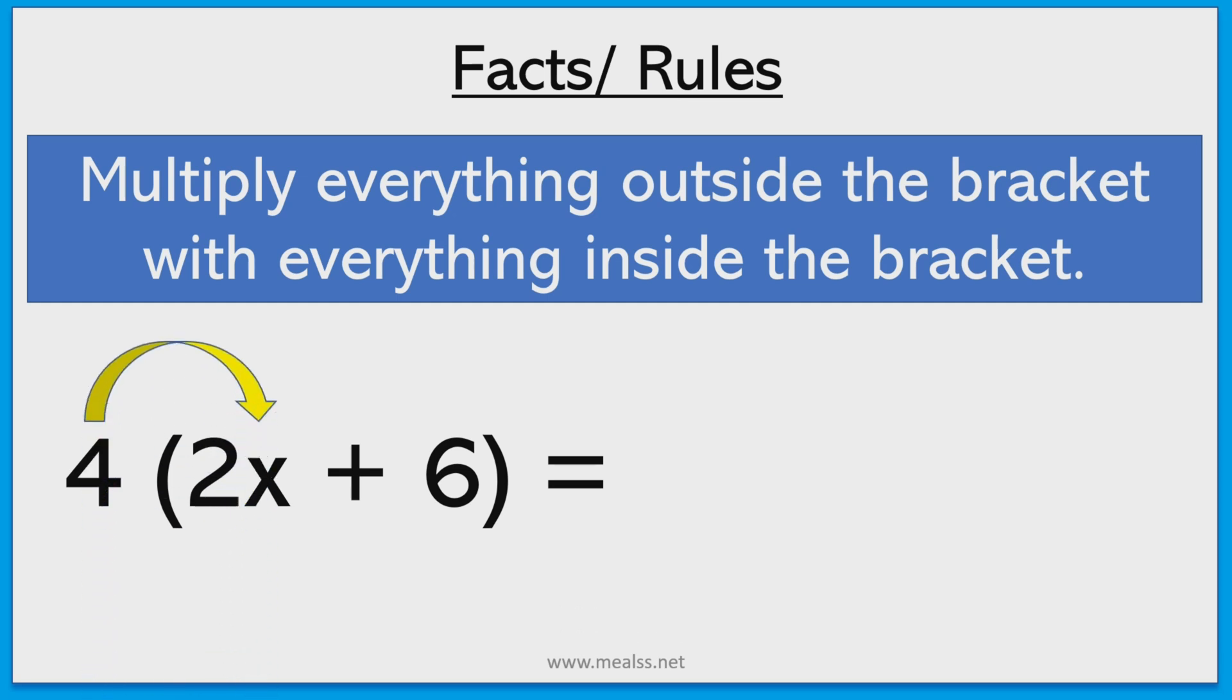So as you can see the 4 when multiplied by the 2x gives us 8x and then the 4 multiplied by 6 gives us 24. The reason why it's positive is because the positive sign goes with the 6.